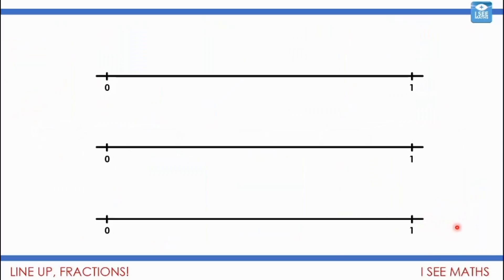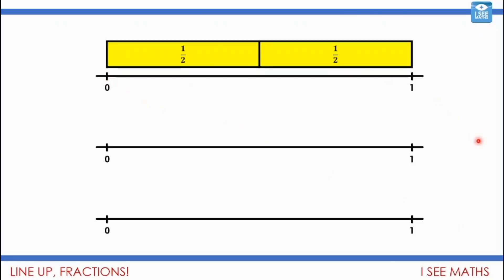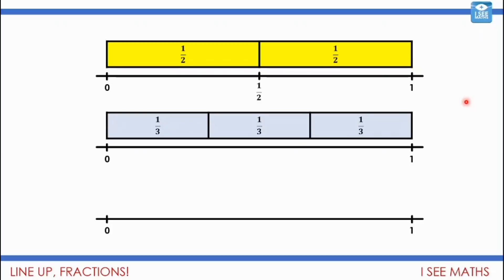So let's have a think about how we position fractions on a number line — with these three number lines and some different fractions — focusing on the space between zero and one. If I was trying to split that space up into half, I would need to split it into two equal pieces, almost like that whole rectangle has been split into two equal halves. So where would a half go? Exactly in the middle. What about splitting into thirds — three pieces? One third is here, and then two thirds would be here.